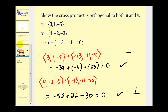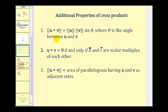Before we move on, let's discuss some additional properties of cross products. First, the magnitude of u cross v equals the magnitude of u times the magnitude of v times sine theta, where theta is the angle between the two vectors. Second, u cross v equals zero if and only if the two vectors are scalar multiples of each other. Third, the magnitude of the cross product equals the area of the parallelogram having u and v as adjacent sides. We'll explore these more in future videos.